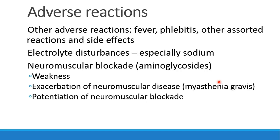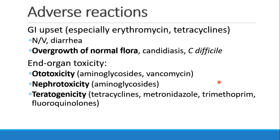There are also other non-histamine-related adverse reactions, including fever, phlebitis, electrolyte disturbances, and neuromuscular blockade. Patients can have GI upset — that's especially true with erythromycin or tetracyclines, which affect GI motility. In general, patients can have nausea, vomiting, or diarrhea. They can also have overgrowth of the normal flora in their GI tract as you kill some of the flora with your antibiotic.